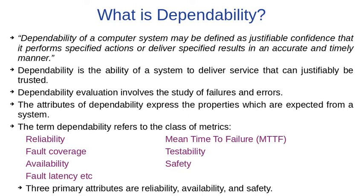So first, what is dependability? As per definition, dependability of a computer system may be defined as justifiable confidence that it performs specified actions or delivers specified results in an accurate and timely manner. In other words, dependability is the ability of a system to deliver service that can justifiably be trusted. In simple words, dependability is the study of failures and errors.